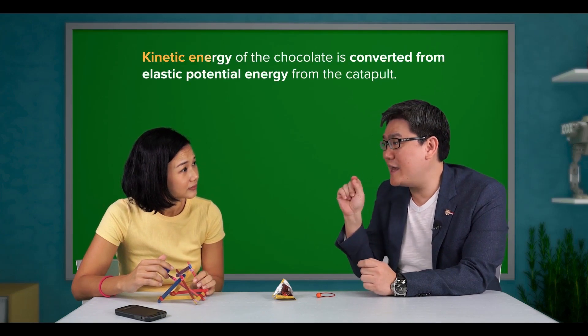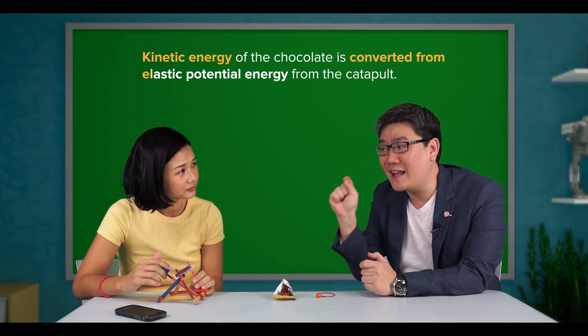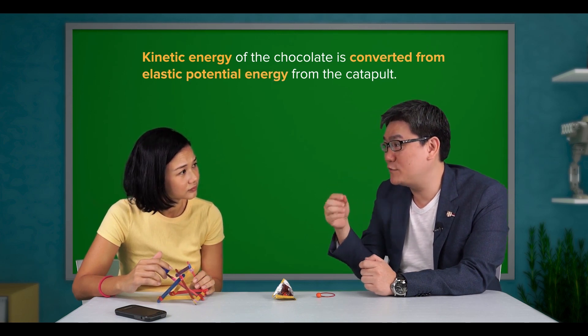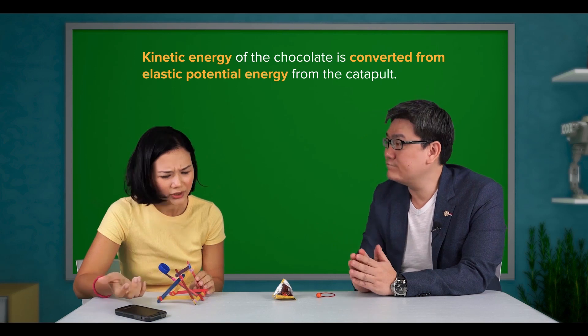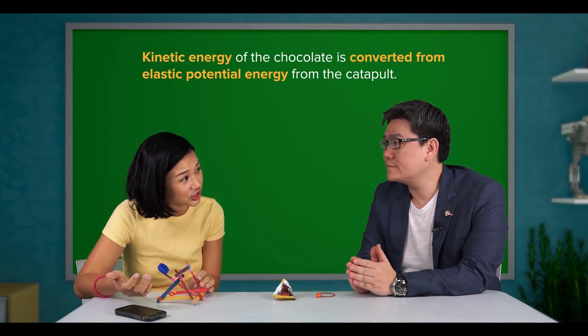In this example, kinetic energy of the chocolate is converted from elastic potential energy from the catapult. But why is that so, teacher? Isn't the elastic potential energy used up by the chocolate?